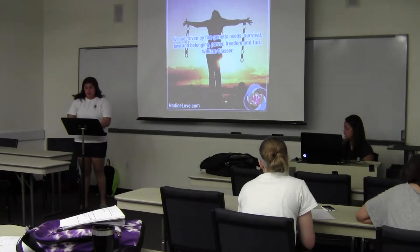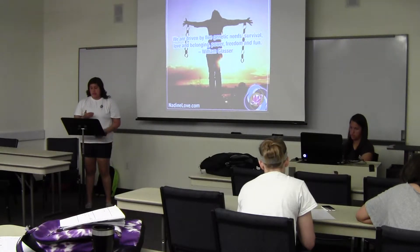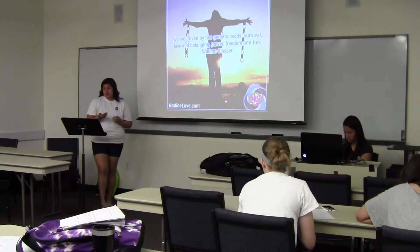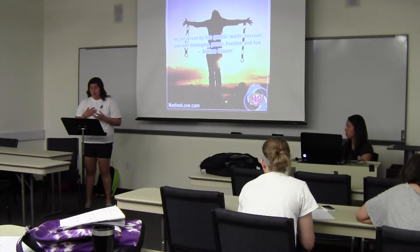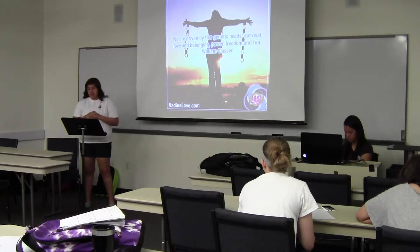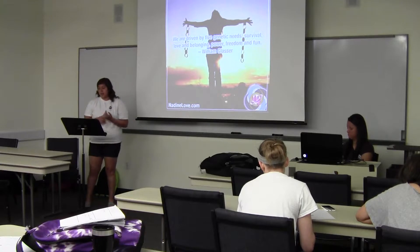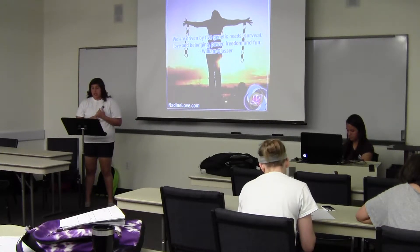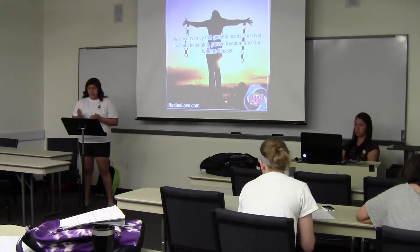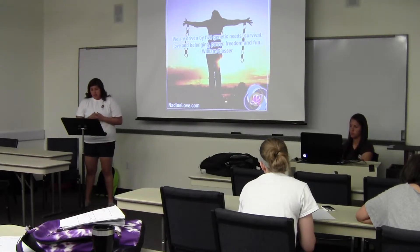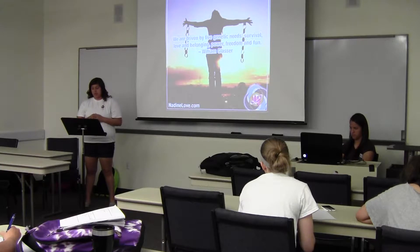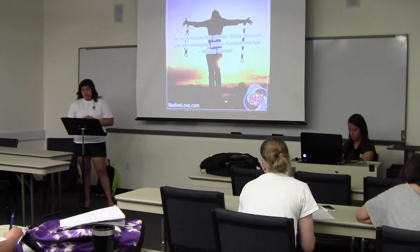Choice theory talks about the major thrust of the theory — that we carry around pictures in our heads of both what's reality and how we would like it to be. Glasser says all our behavior is consistent with what we want and what we have. An example would be eating when you're hungry. We develop these pictures at an early age and spend our whole lives enlarging them — for example, a child eating chocolate for the very first time. The pictures come from our five senses and are not always rational, such as with an anorexic or a rapist.